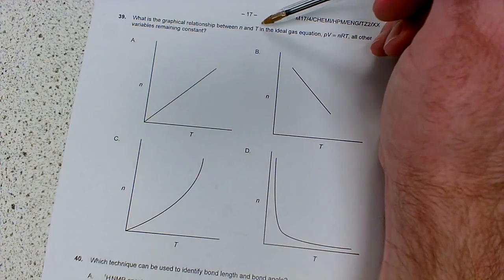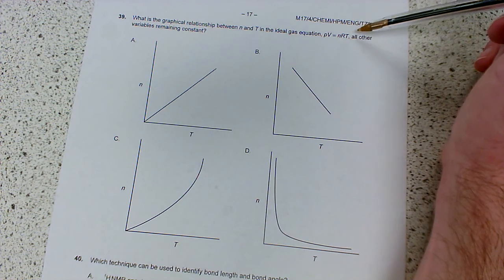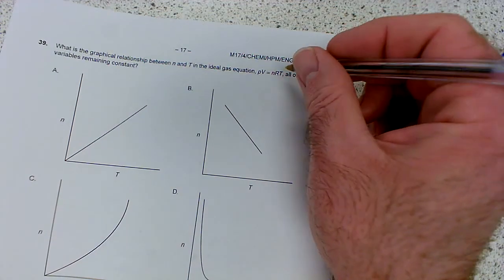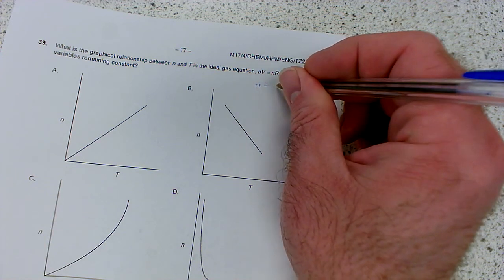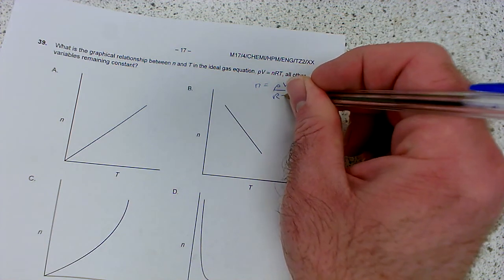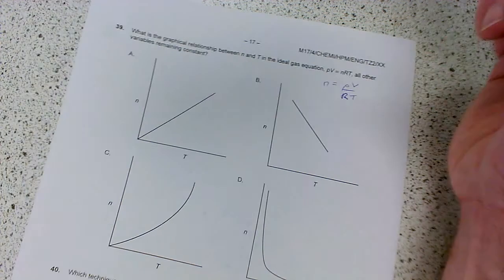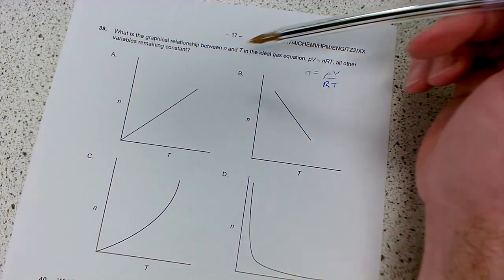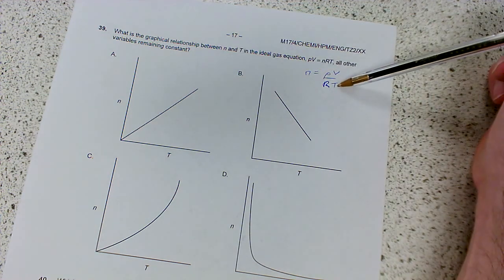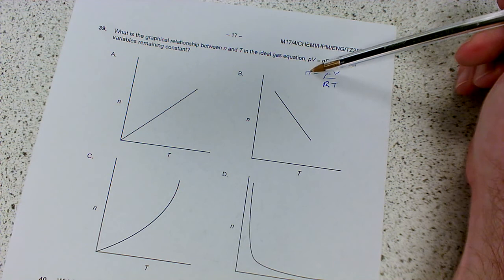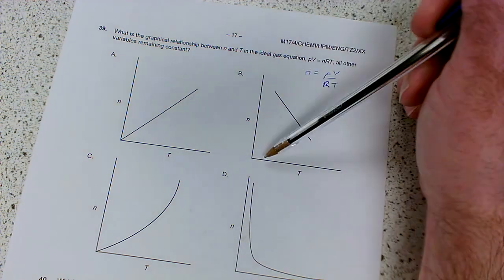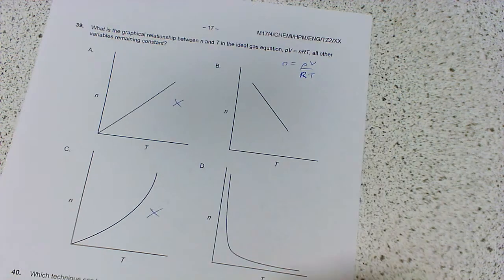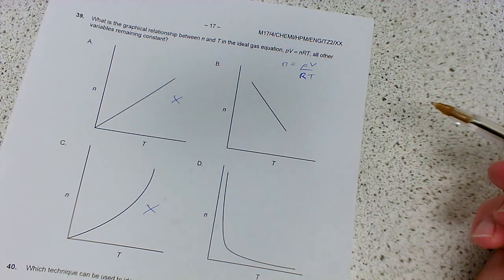What is the relationship between n and T in the ideal gas equation PV = nRT when all other variables remain constant? Rearranging to find n: n = PV/RT. As temperature increases, n decreases because temperature is on the bottom. So we can eliminate A and C.